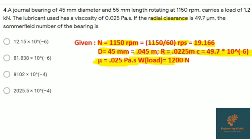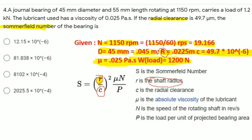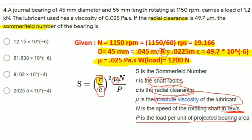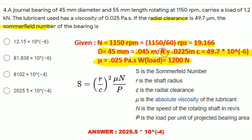Diameter is 45 mm converted to 0.045 meters. Radius is D/2, that is 0.0225. Radial clearance is 49.7 × 10^-6 meters. Coefficient μ is 0.025, and load W is 1200 N. The Sommerfeld number S equals (R/C)² × (μN/P), where R is shaft radius, C is radial clearance, μ is absolute viscosity, N is speed in revolutions per second, and P is load per unit of projected bearing area. By calculating and putting all values, we get 2025.5 × 10^-4. This is a very important question for GATE.